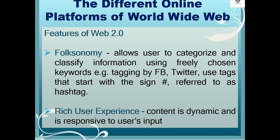Some features of Web 2.0: first is folksonomy, which allows users to categorize and classify information using freely chosen keywords, like tagging. Facebook and Twitter use tags that start with the pound sign, referred to as a hashtag.